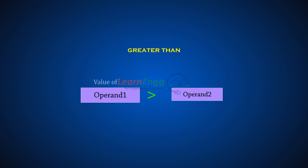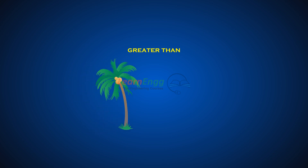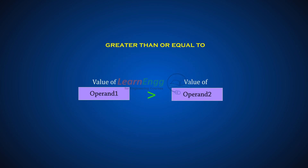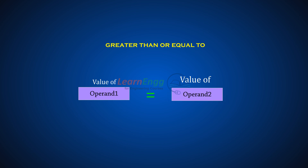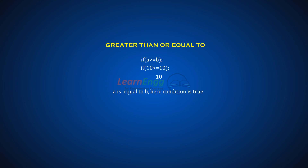The greater than operator checks if the value of the left operand is greater than the value of the right operand; if yes, the condition becomes true. For example, tree1 height is 10 feet and tree2 height is 8 feet; comparing the two heights, tree1 height is greater than tree2. The greater than or equal to operator checks if the left operand is greater than or equal to the right operand. For example, if A is greater than or equal to B, that is 10 greater than or equal to 10: comparing A greater than B is false, then checking equal — both values are equal, so the result is true.